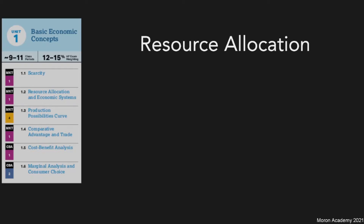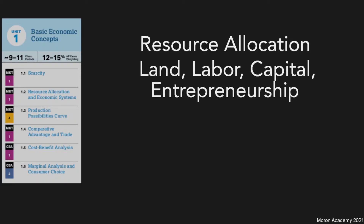There are four types of resources in economics: land, labor, capital, and entrepreneurship. The first two are pretty self-explanatory. Capital is basically machinery and stuff you purchase that isn't land or labor. Entrepreneurship is the know-how and the skills of knowing how to run a business.